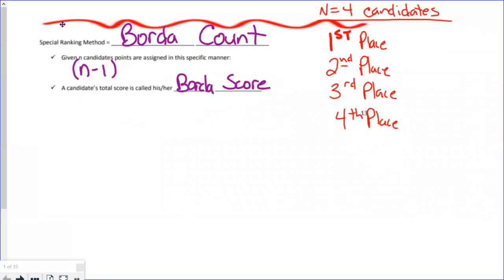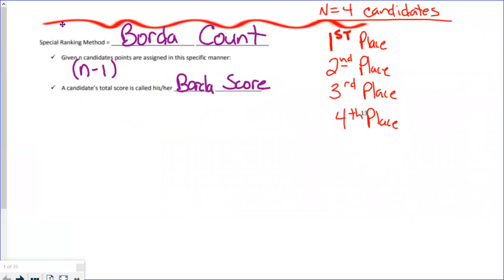This is the bottom of page 13, right below the basketball AP poll. We talked about Borda count, which is a special ranking system. We also talked about the rank method, and the rank method can be anything — any score for first place, second place, or third place, depending on the instructions in the problem.